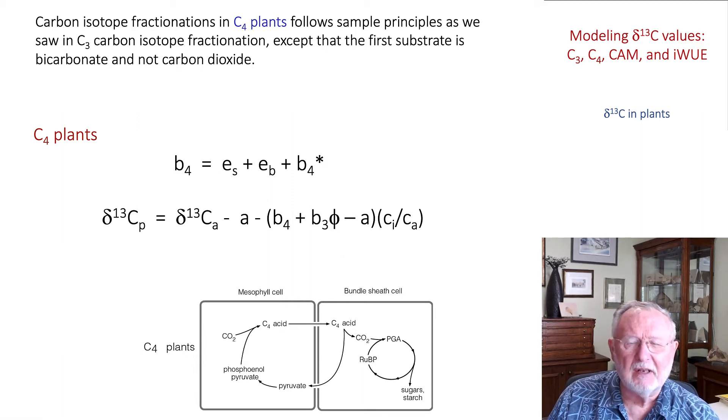And that term represents the leakiness associated with C4 metabolism. That is, once CO2 is converted to a C4 acid, diffuses in, and is then decarboxylated, there is no reason why the CO2 can't diffuse back out. When it does, it gets refixed by PEP carboxylase in this initial cycle. But as that CO2 leaks out, it creates an opportunity for a fractionation event, and that is where this B3 theta term comes into play.